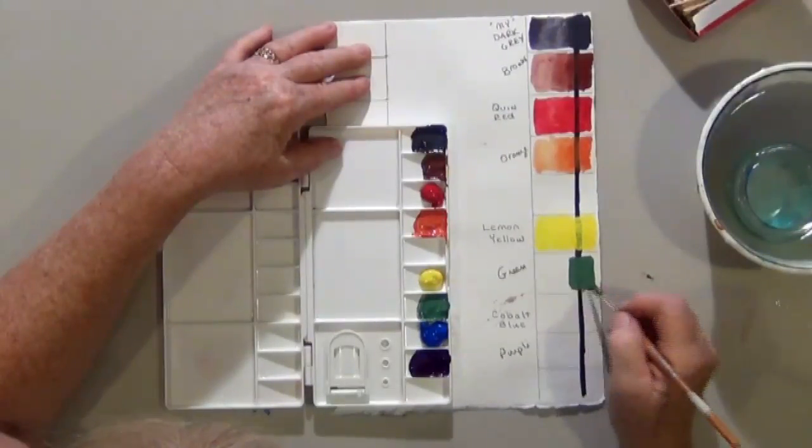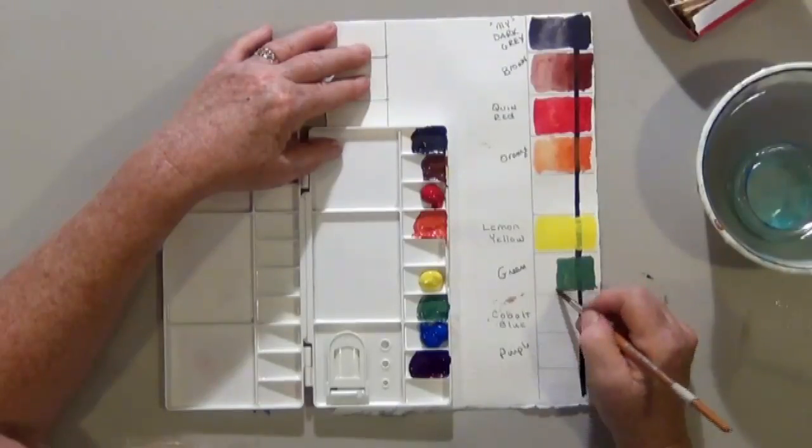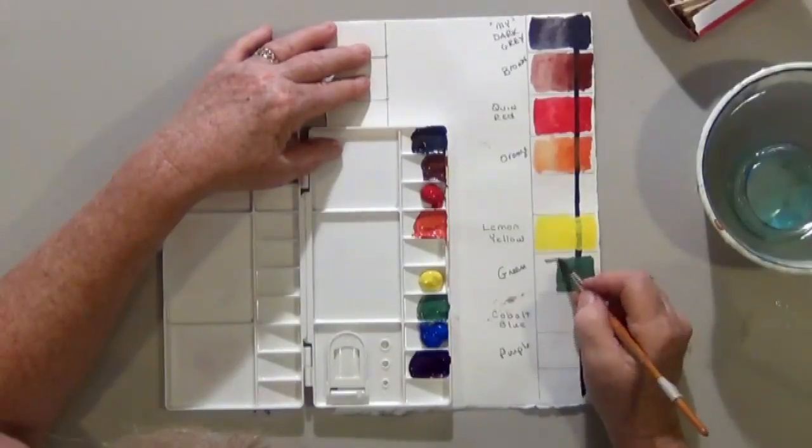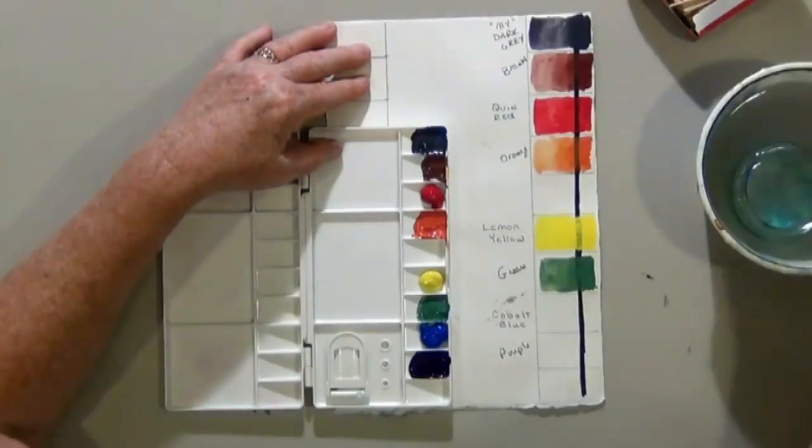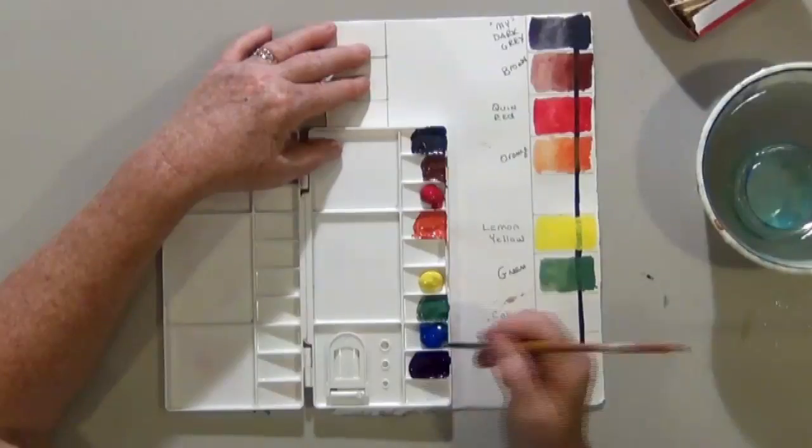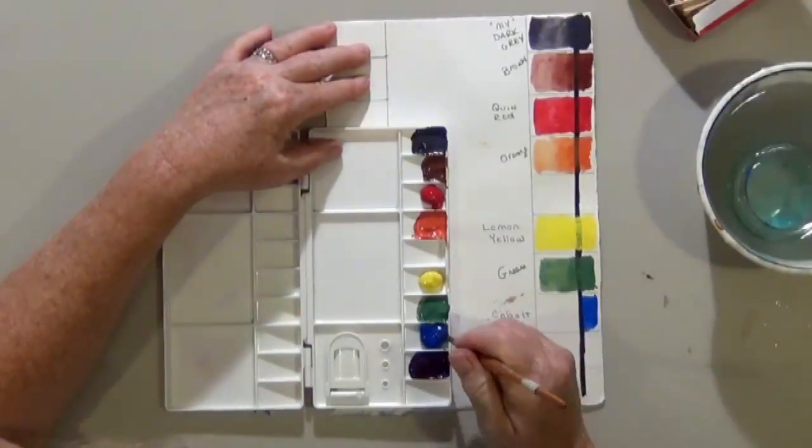And you can check that on the, usually on the side of the tube it will list the pigments. So if it says PW and a number that means pigment white. And I would avoid that at all cost.